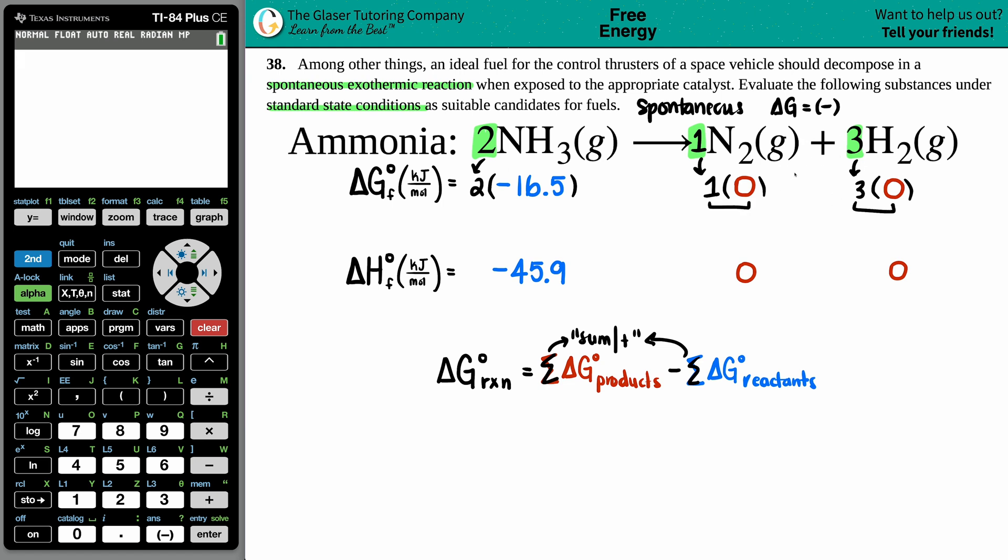So zero plus zero is zero on this side. Let's go to the calculator: two times negative 16.5 equals negative 33. So negative 33 for this side. Now I'm going to take these values and plug them into my delta G.